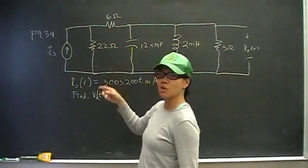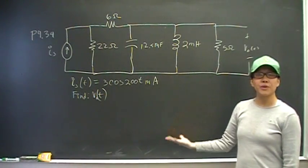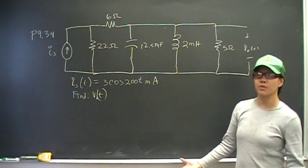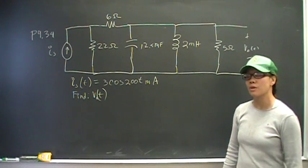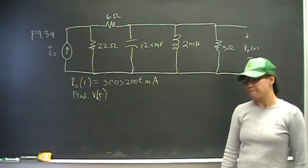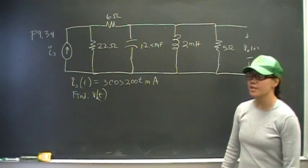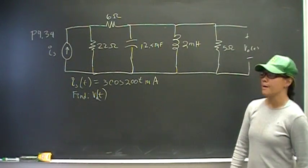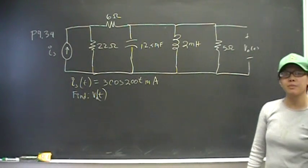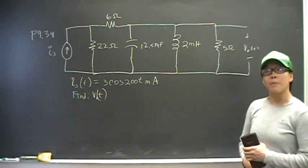We're trying to find voltage, we have current, so somehow we have to get current in terms of voltage. What are some of the tools you have? You have superposition, source transformation, wye-to-delta transforms, equivalent resistances, equivalent impedances.